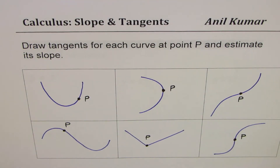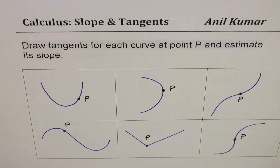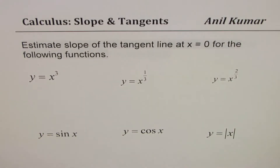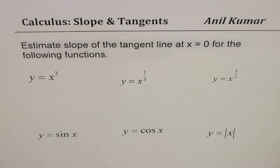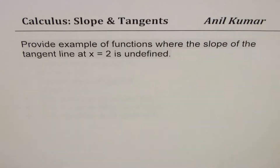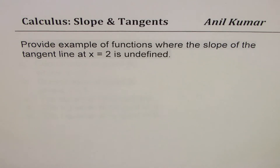I'm Anil Kumar and in this video we will do a review of the unit on slopes and tangents for calculus. We'll begin with a very simple question: you need to draw a tangent line at the point P given on a curve and estimate the slope. Then we'll take up some equations and estimate the slope of the tangent line at x equals zero. When we say undefined slope, it could be a vertical line.